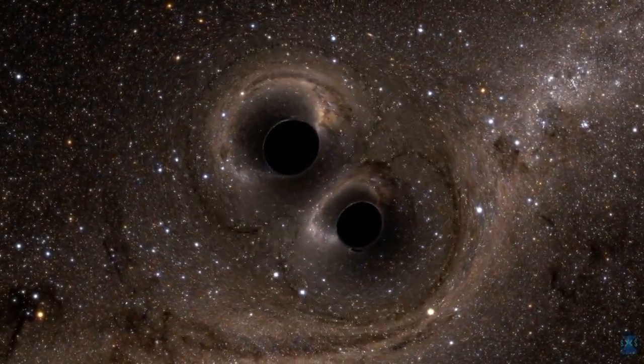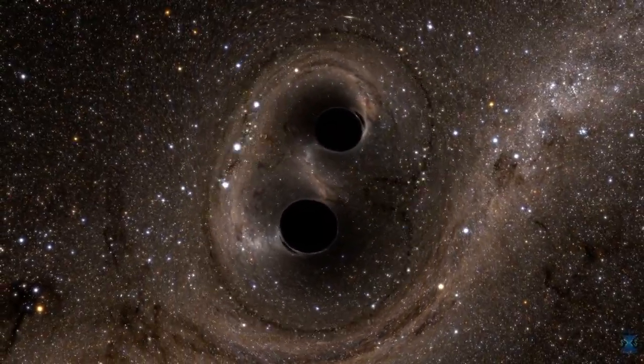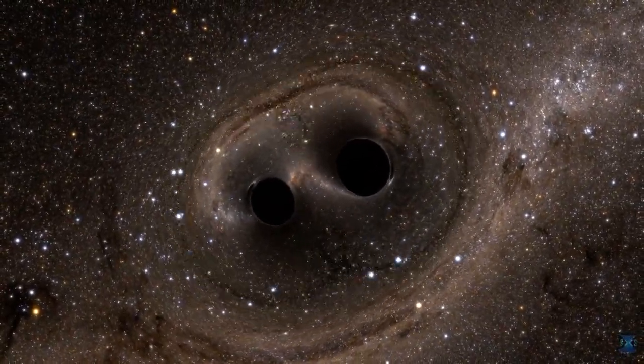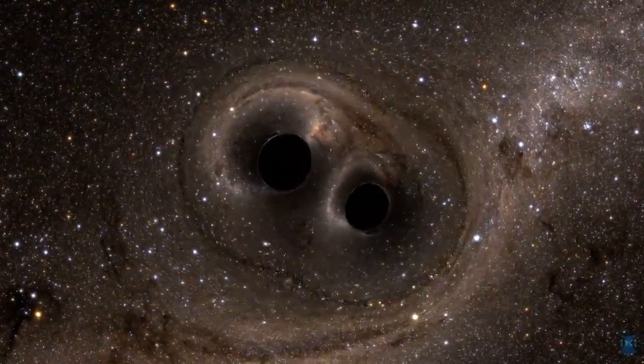A long time ago, in the distant reaches of the universe, two black holes, each about 30 times as massive as our sun, were locked in orbit and spiraling in towards each other.